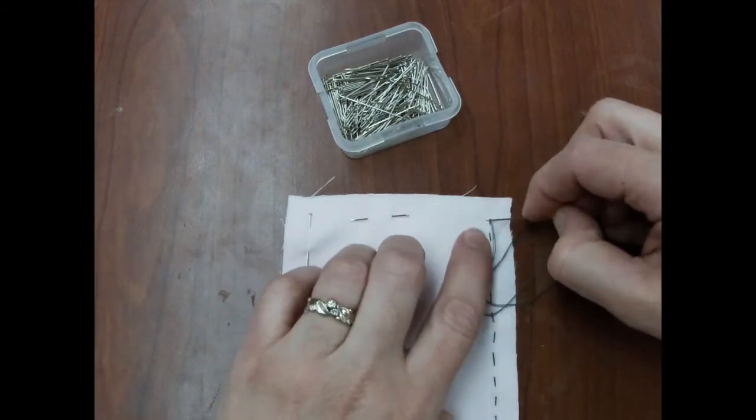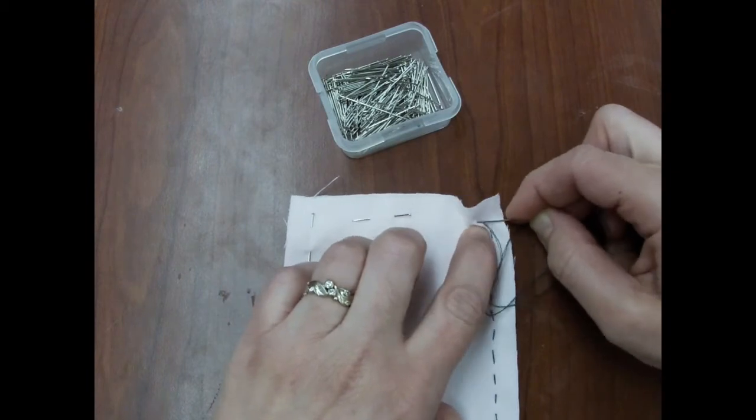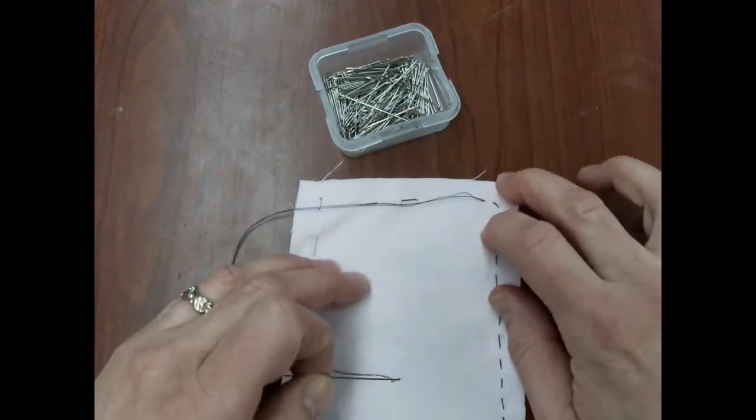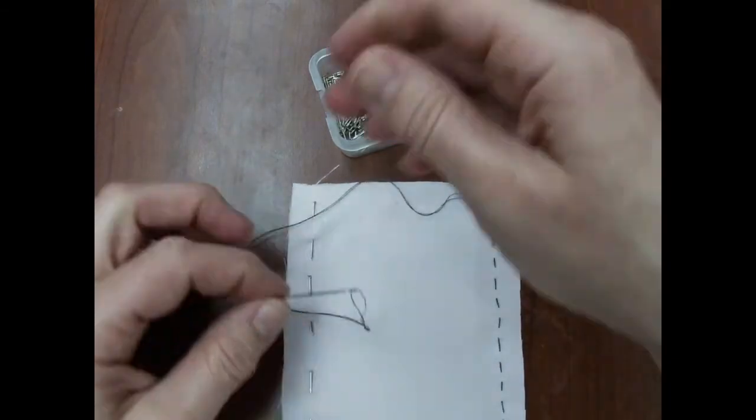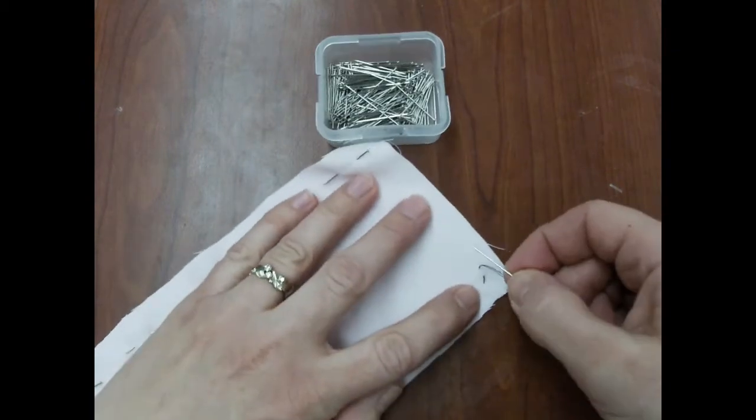As for a quicker way to sew a straight stitch, you can make more than one stitch at a time. So once you have practiced making your straight stitch, try doing a straight stitch with several stitches before you pull the thread through, like this.